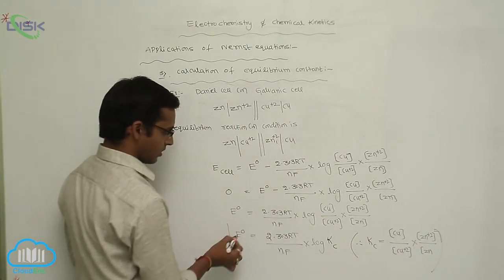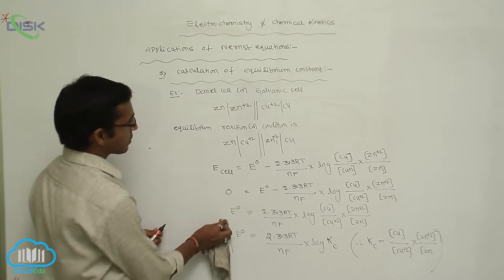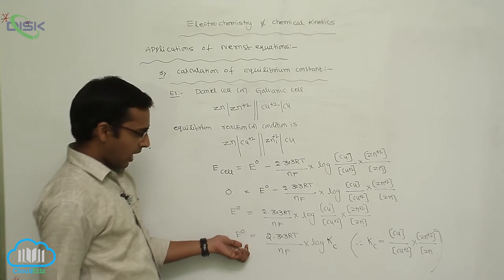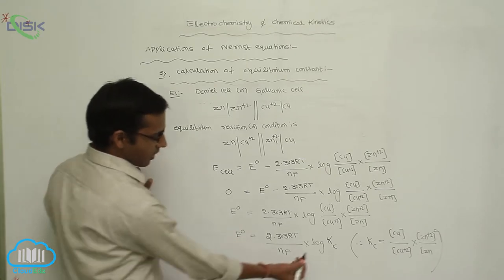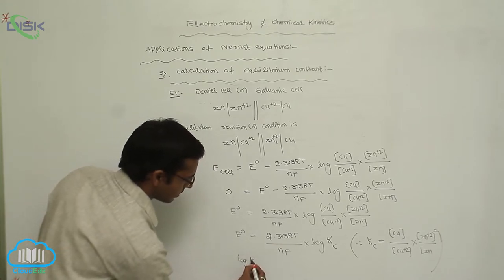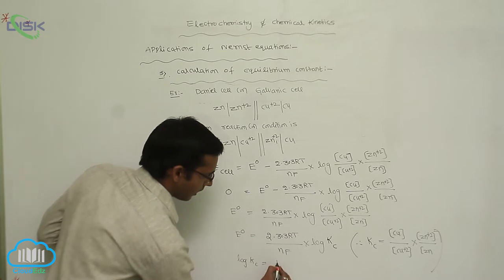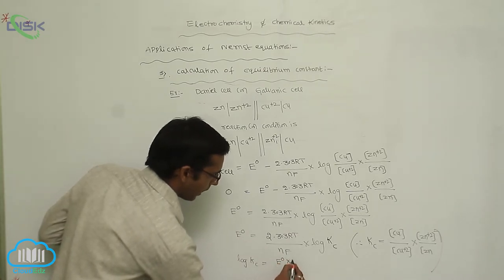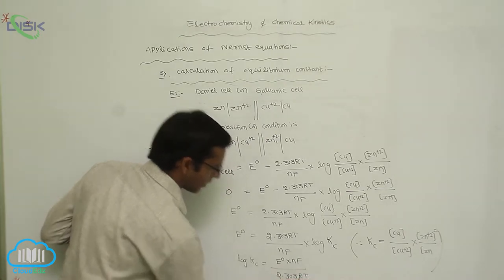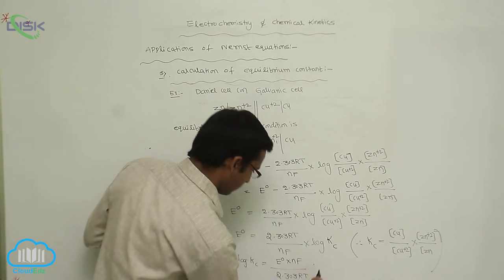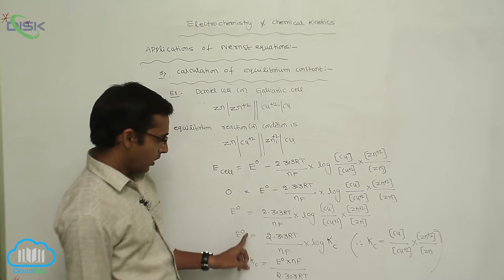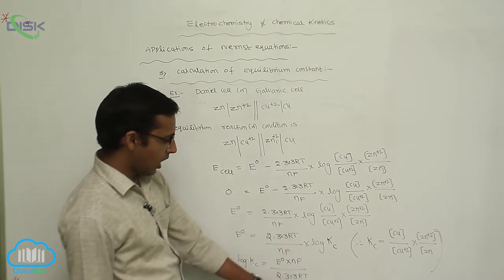So this is the calculation of equilibrium constant with help of the Nernst equation. In this equation, log Kc = E° × Nf / (2.303RT). By cross multiplication: log Kc = E°·Nf / (2.303RT).